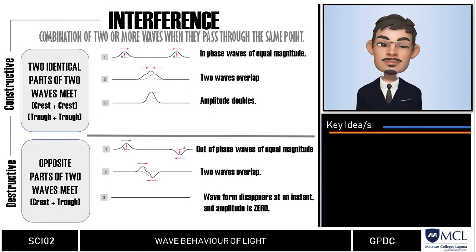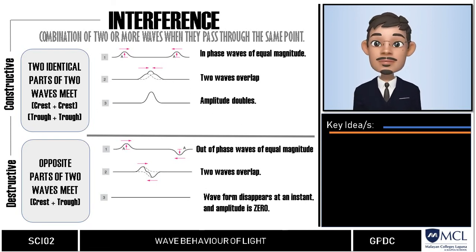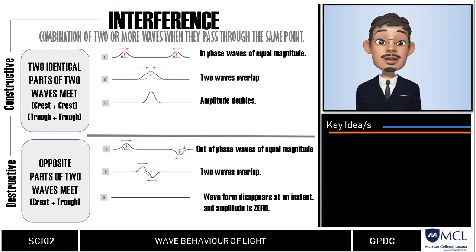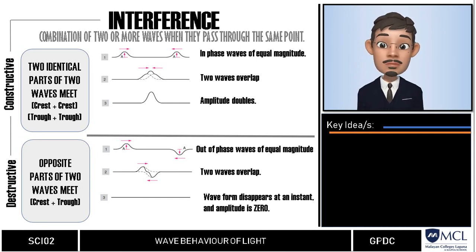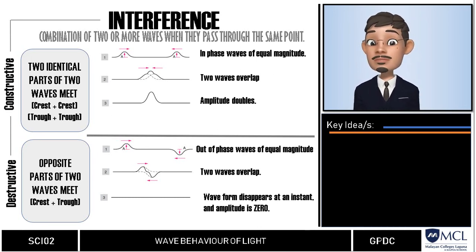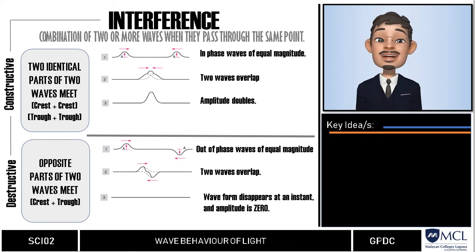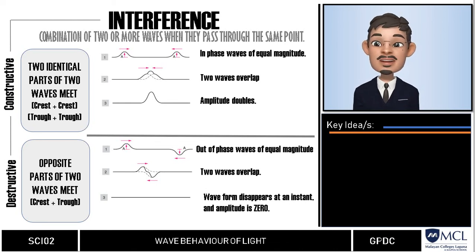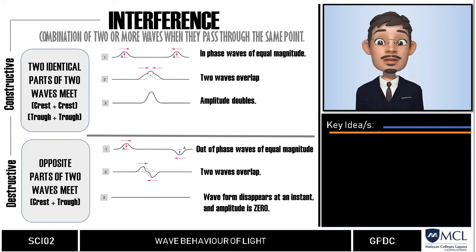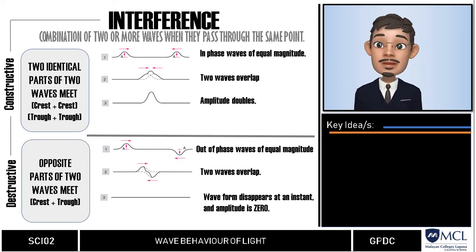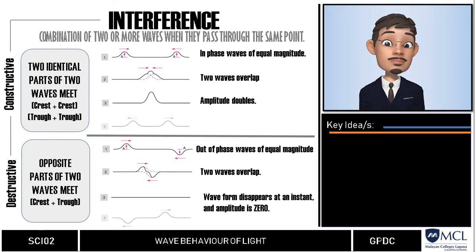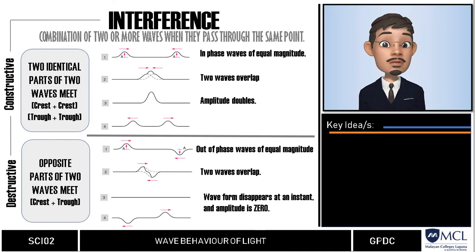But the word 'destructive' is quite misleading. Do not get the idea that the energy of the pulses is destroyed. The waveform is destroyed but the energy is still there in the medium, only conserved as potential energy. After interference, the individual wave pulses continue on with their original waveforms.